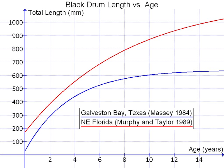Total length is the length of a fish measured from the tip of the snout to the tip of the longer lobe of the caudal fin, usually measured with the lobes compressed along the midline. It is a straight line measure, not measured over the curve of the body. Standard length measurements are used with teleosts, while total length measurements are used with myxini, petromyzontiformes, and usually elasmobranchii, as well as some other fishes. Total length measurements are used in slot limit and minimum landing size regulations.